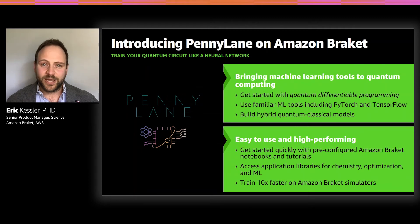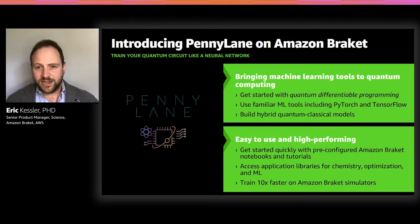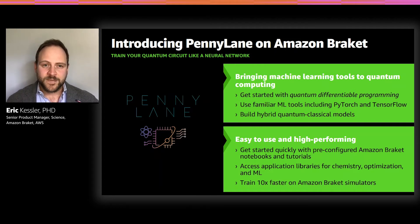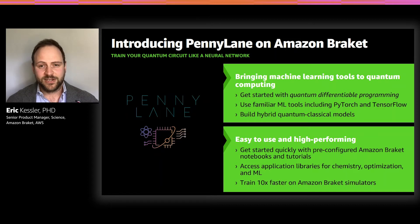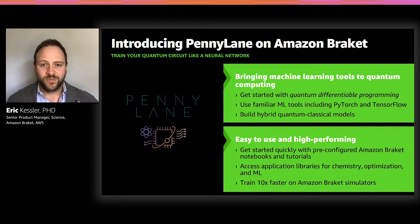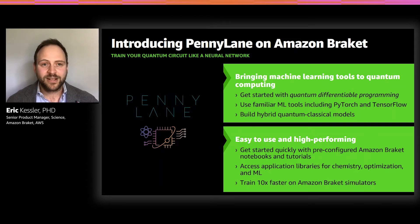That is why we are introducing and have launched PennyLane on Amazon Braket. PennyLane is an open-source software library that brings machine learning tools to quantum computing. PennyLane over many years has pioneered the idea of quantum differentiable programming by generalizing machine learning concepts and applying them to quantum computing. More than that, PennyLane actually allows you to use familiar machine learning libraries like PyTorch or TensorFlow directly to program your quantum algorithms, making it easy and intuitive to get started with hybrid quantum computing.